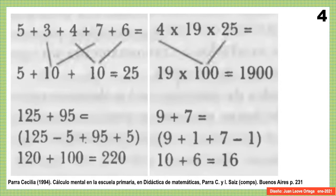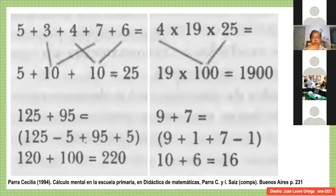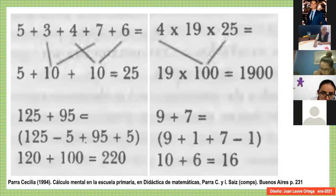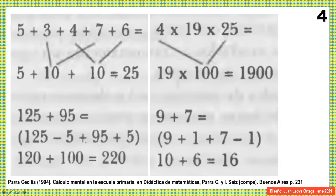Aquí está el primer ejemplo que pueden ver a la izquierda: los amigos del 10. El 3 y 7, el 4 y 6, me da 20 y ya nada más agrego el 5. El ejemplo de la suma de abajo: 125 más 95. A 125 le quito 5, se los agrego a 95, me da 100 y me quedo con 120, y el resultado es 220. Otro ejemplo de multiplicación: 4 por 19 por 25. No es tan difícil porque 4 por 25 me da 100 y luego 19 por 100. Algo que hemos trabajado mucho en la primaria es que cuando un número se multiplica por 10 le agregamos un cero, por 100 le agregamos dos ceros, y por 1000 le agregamos tres ceros.